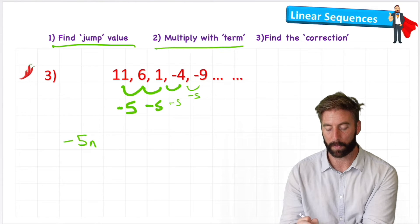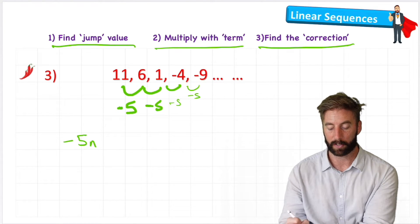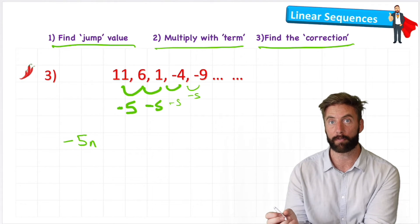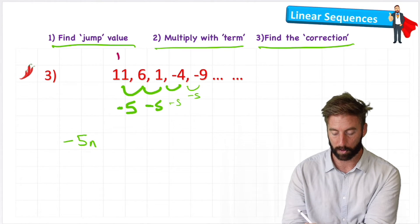Then we're going to multiply with the term and find the correction. So let's look at an example with one we've got. But first let's put our term values on the top, our numbers: 1, 2, 3, 4, 5.